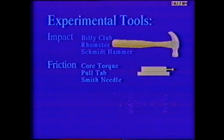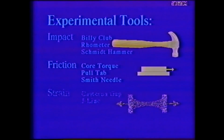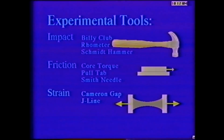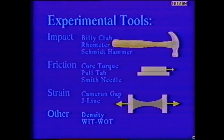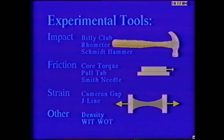Similarly, machine direction strain can be measured using the Cameron Gap and J-line tests. Finally, there are more sophisticated measurement systems such as the computerized density analyzer and special purpose lab winders. While there are many measurement systems, we will discuss only the more widely used.